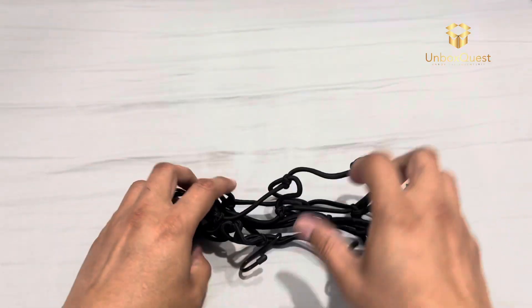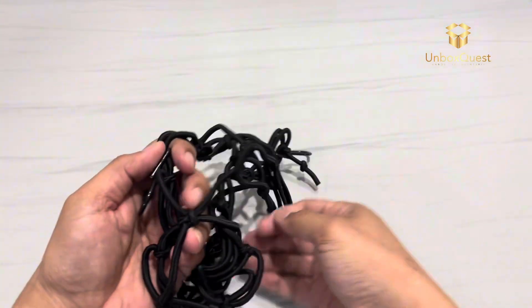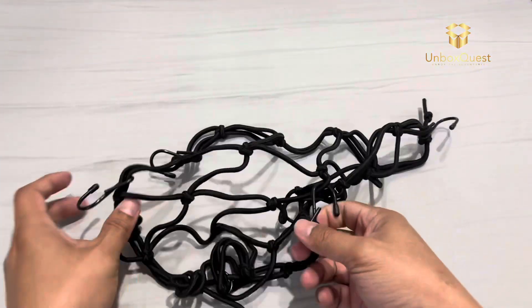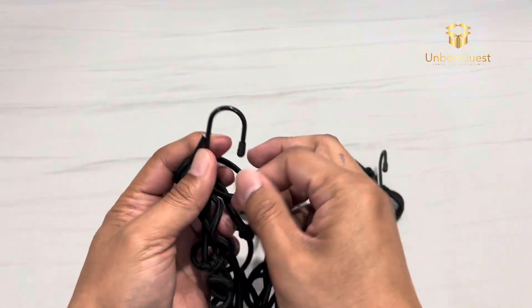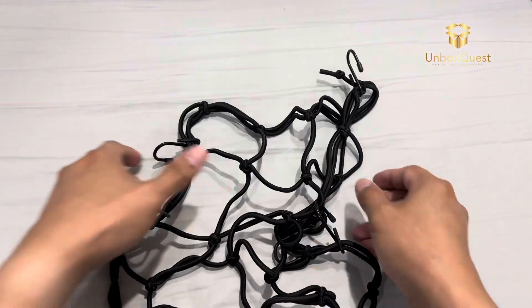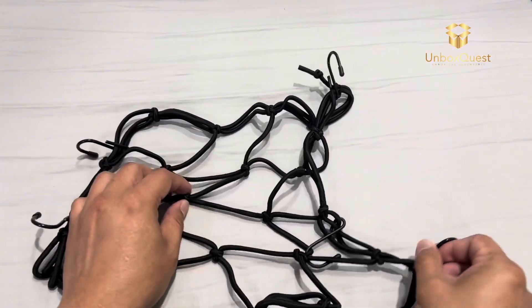Inside, we have the luggage net itself. It's compact and looks sturdy. This net is designed to secure your luggage on your bike with ease. It's made from durable elastic cords and has several hooks for attachment.